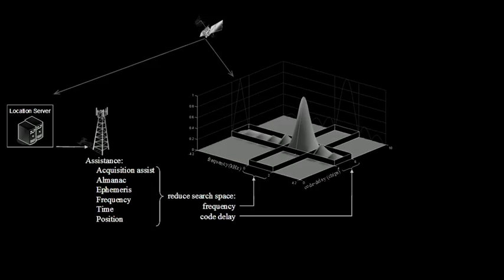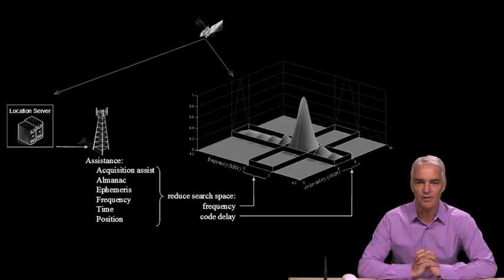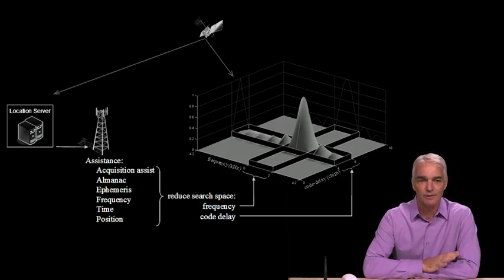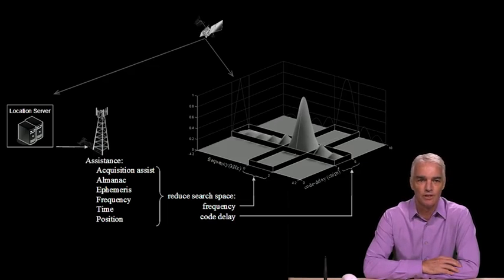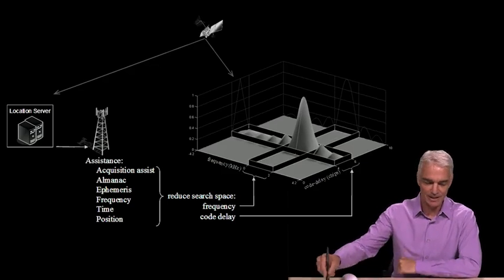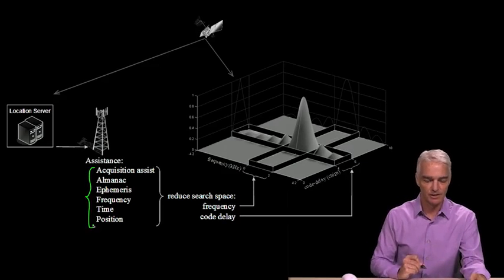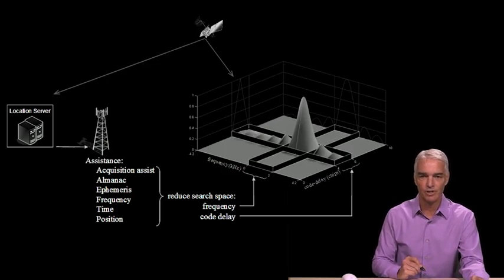The system will look like this for assisted GPS. You have the satellite, and the satellite produces the search space that we have to search to find the signal, just as we looked at in the previous video. But now we have a network, like a cellular network, and somewhere connected to that network, you have a location server, which is basically a GPS receiver connected to a computer. And it's observing the signals from the satellite and providing this assistance data shown here, this whole set of assistance data here. And so let's look through each of these one at a time to see what they can do for us.